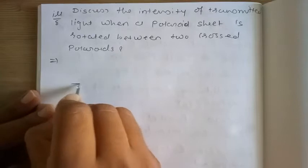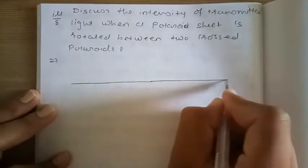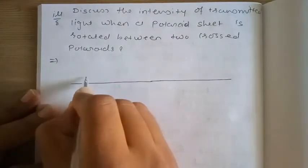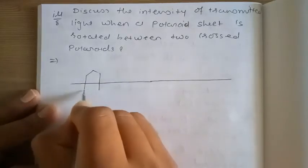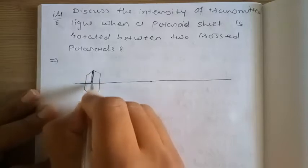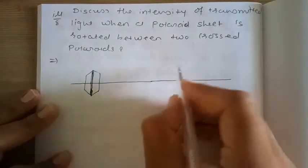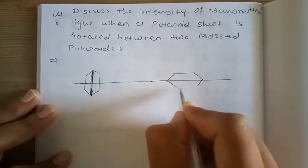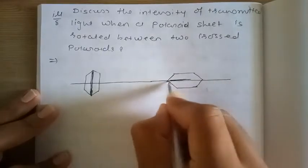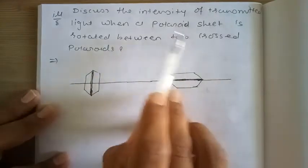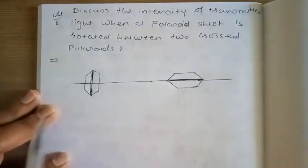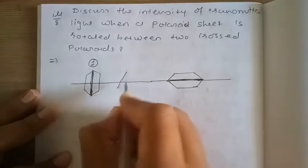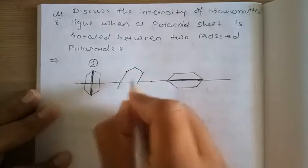Here the polaroid sheet is rotated between two cross polaroids. We consider the first polaroid with its pass axis. Now there are two cross polaroids, so the second one has its own pass axis. One polaroid sheet is rotated between these two cross polaroids.